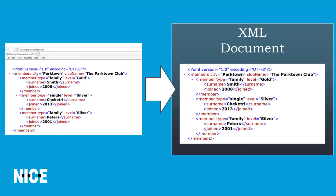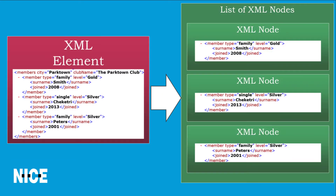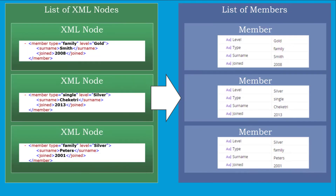First, we will load the entire XML file into an XML document variable. We will then extract the root node from the XML document into an XML element variable. Next, we will extract the member nodes of the XML element and store them in a list of XML nodes. Finally, we will read the data from each XML node to populate a member variable in a list of members.